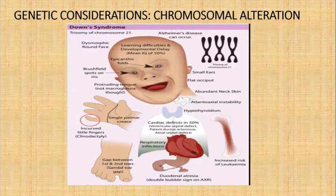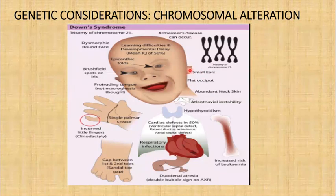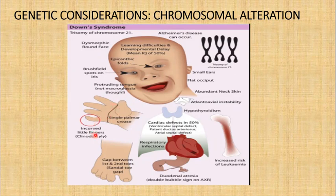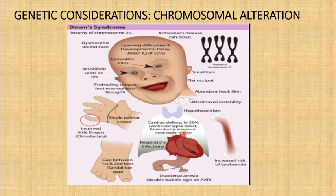We also have Down syndrome, also called trisomy 21. There is increased incidence in women over 35 years. It is characterized by low-set small ears, flat occiput, epicanthic folds around the eye, protruding tongue, a single palmar crease, incurved little fingers, and a gap between the first and second toes. They usually have cardiac defects such as ventricular septal defect, patent ductus arteriosus, and atrial septal defect, as well as a dysmorphic round face. This is what you see when there is alteration in the chromosomes affecting fetal development.